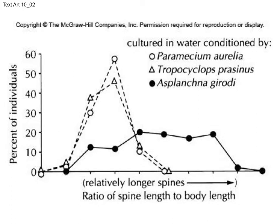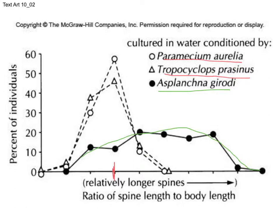Here we have quantitative data showing that when Keratella is cultured with paramecium as a control, most individuals have shorter spines. Culturing with Tropocyclops, a crustacean that is not a rotifer predator, shows the same distribution of medium to short spines. But culturing with Asplanchna produces a broader distribution that definitely includes individuals with much larger spines and a greater median spine length.